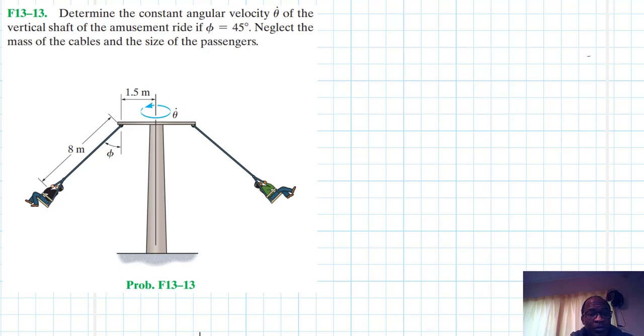This problem is coming from engineering mechanics and dynamics, 14th edition by RSC Bella. Right, so let's draw the free body diagram. The question is to find the constant angular velocity.